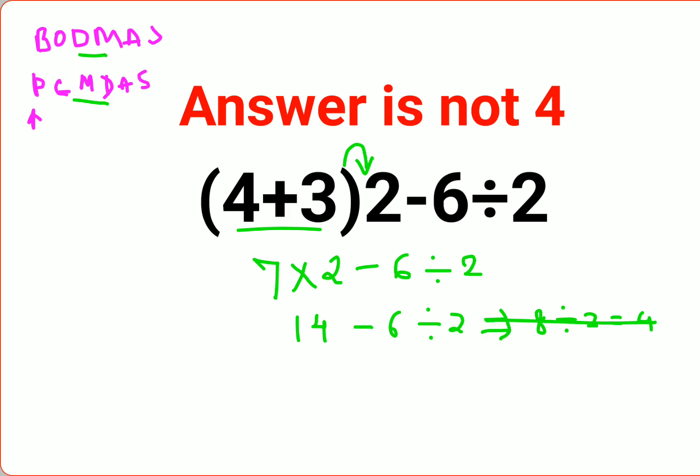Please understand you need to finish your division first and then only you can go to the subtraction operation. So we'll keep 14 minus as it is, and then you will do 6 divide by 2 that gets you 3. So final answer is 14 minus 3, that is 11.